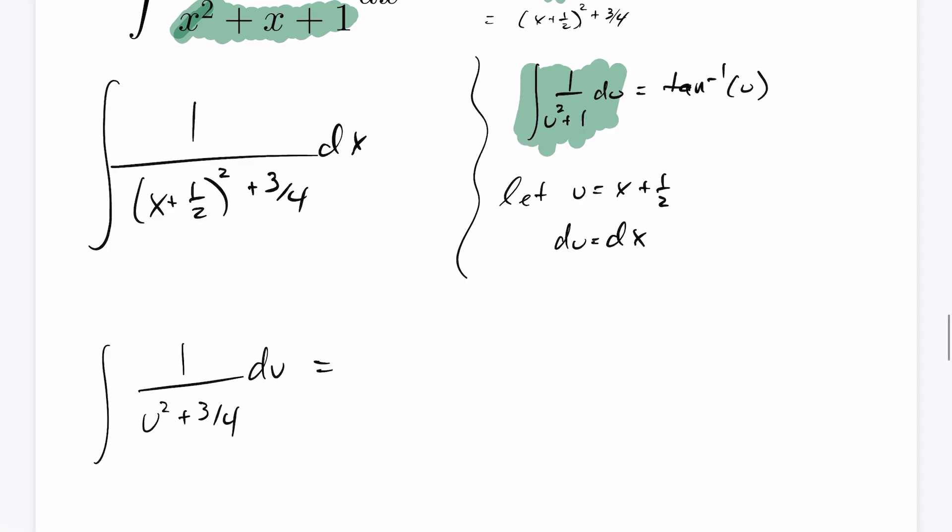Okay, so now I want this to be a 1. So I'm going to factor a 3 quarters out of the denominator here. Now, watch the algebra on this. By taking that 3 fourths out, I'm going to have to incorporate a 3 quarters here to make that, when you distribute that, to get that 1 that you want.